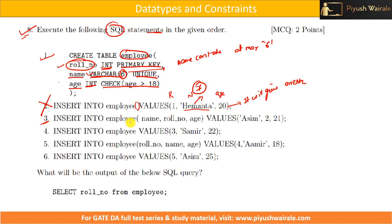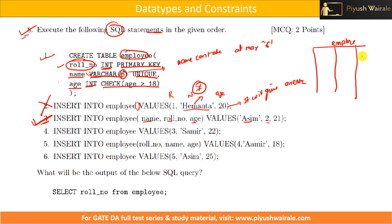The next statement inserts into employee with columns specified in order: name, role_number, then age. The name is 'asim' — four characters, which satisfies the varchar(6) data type. Role number is 2, which is unique since no record has been inserted yet. Age is 21, which is an integer and satisfies the check constraint of greater than 18. So I can insert this record. The employee table now has one row: role number 2, name asim, age 21.